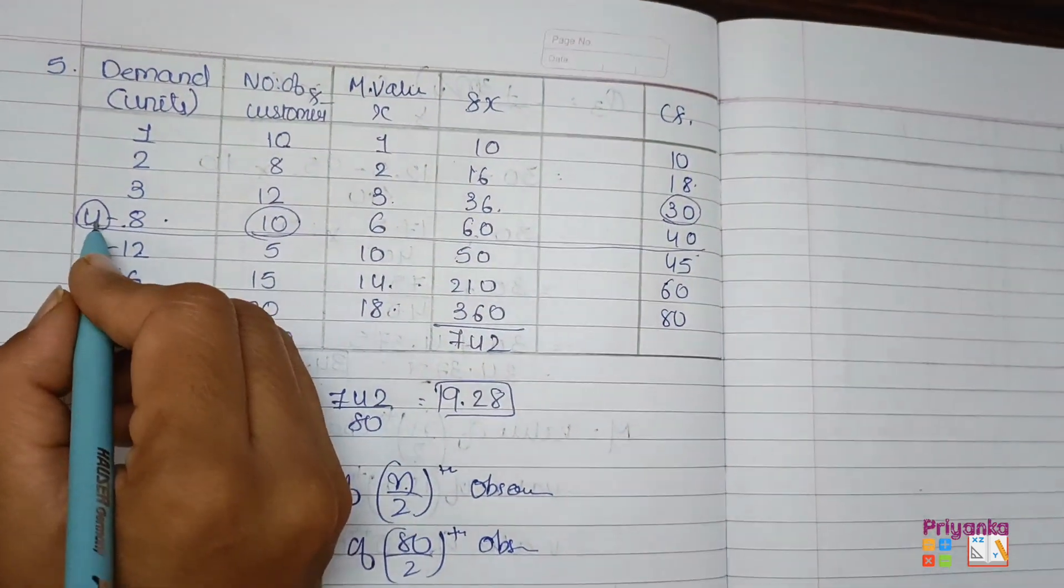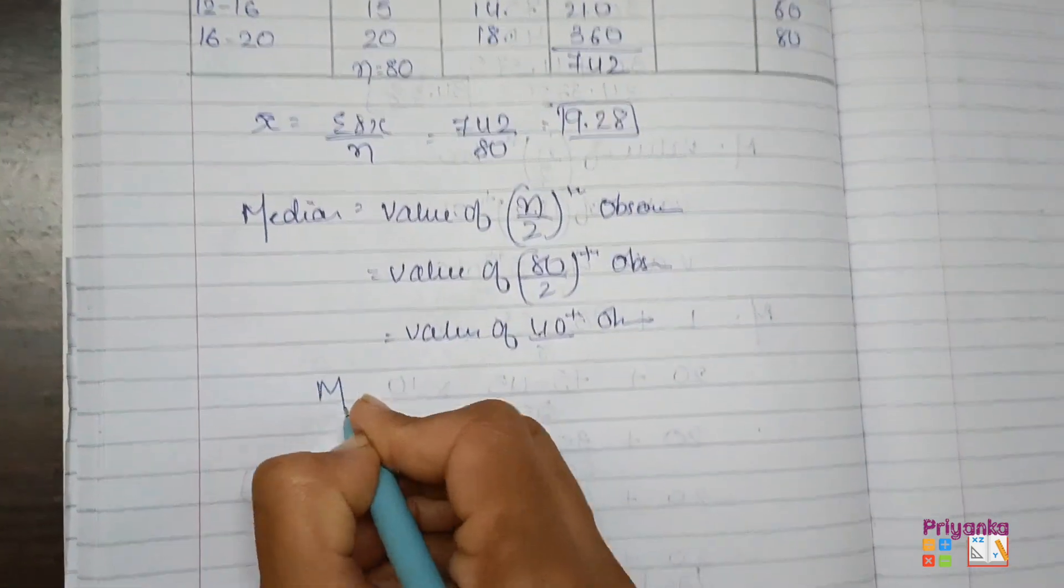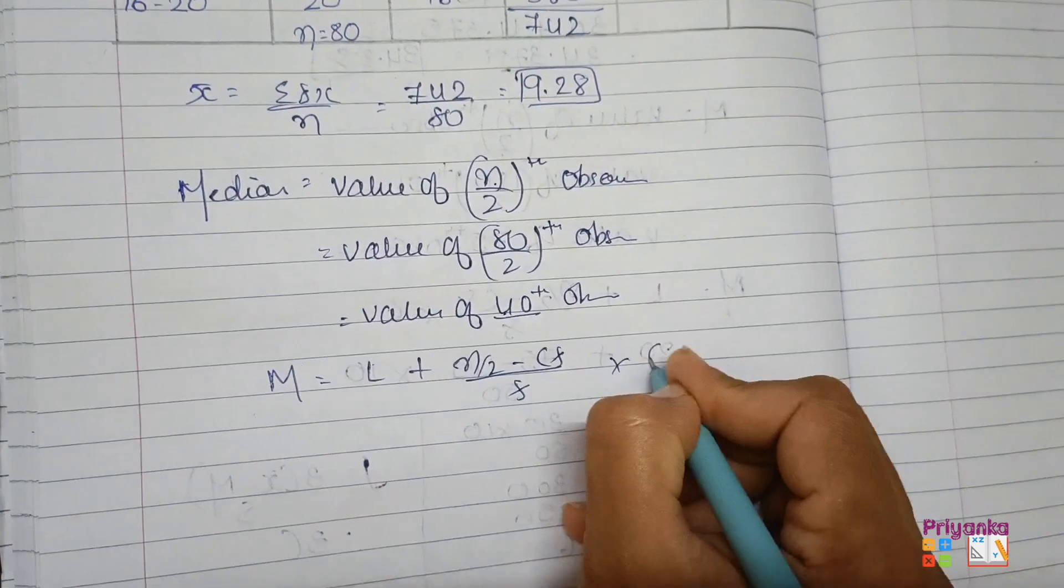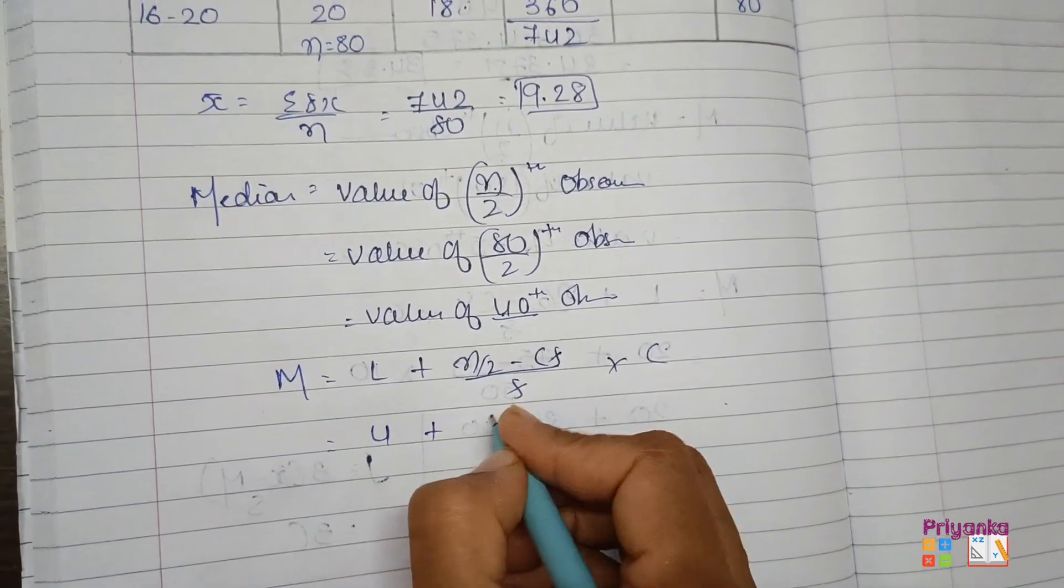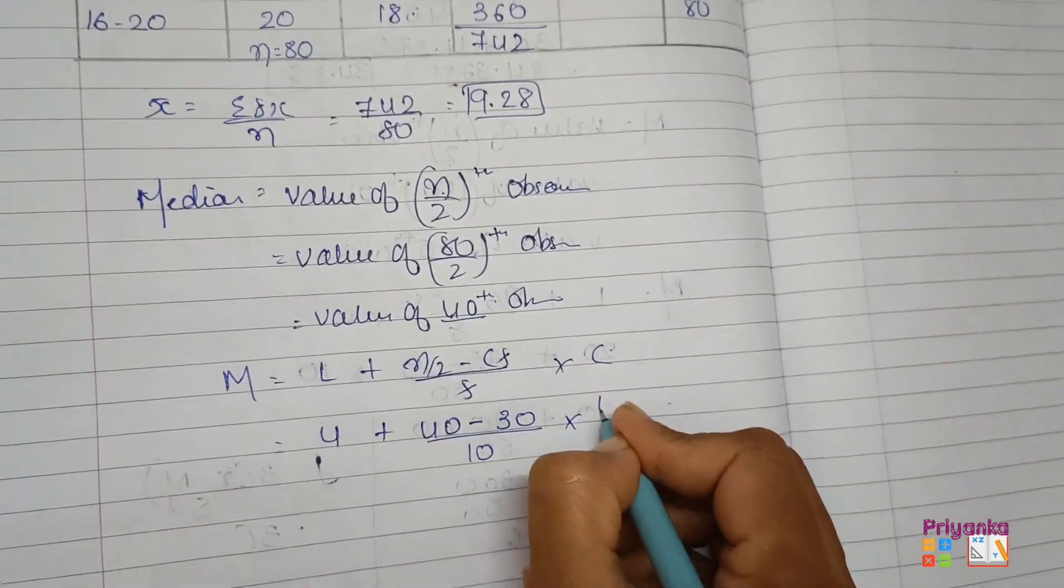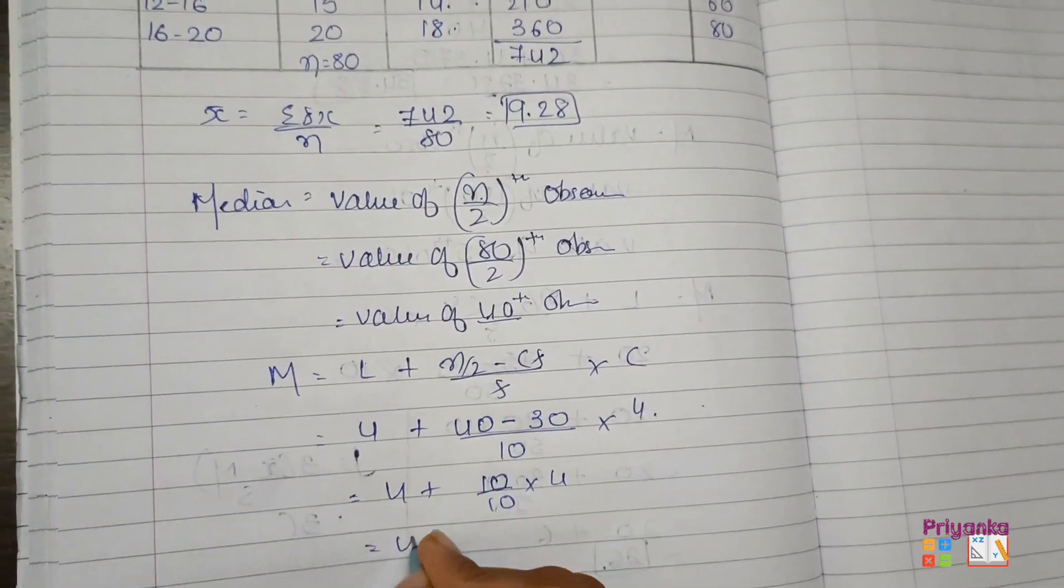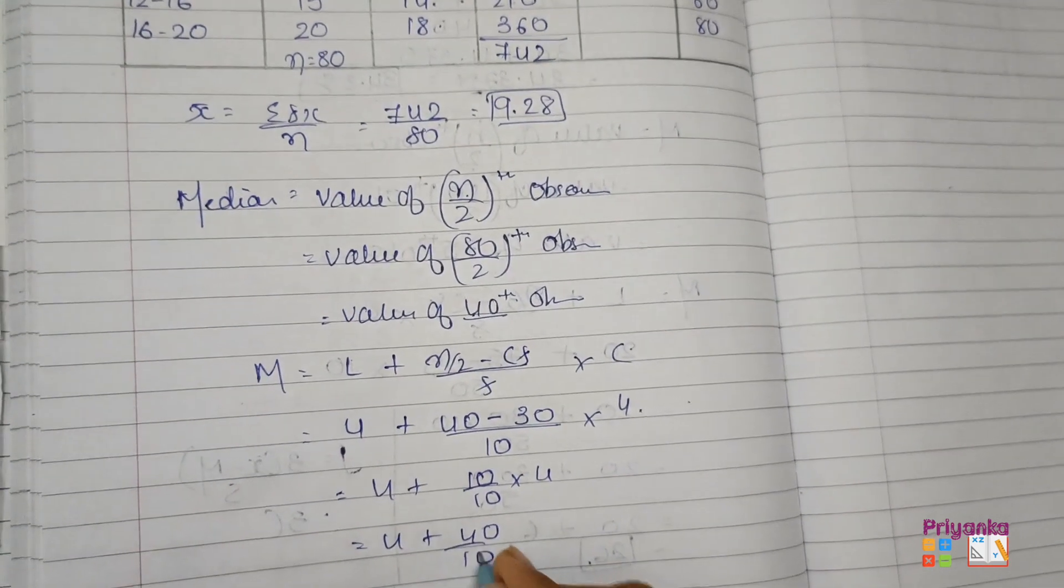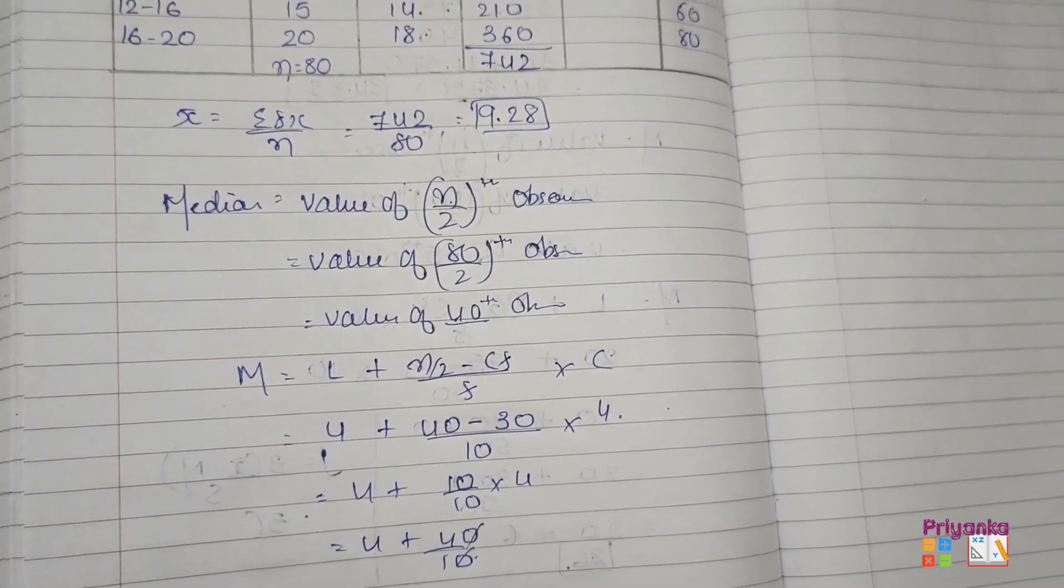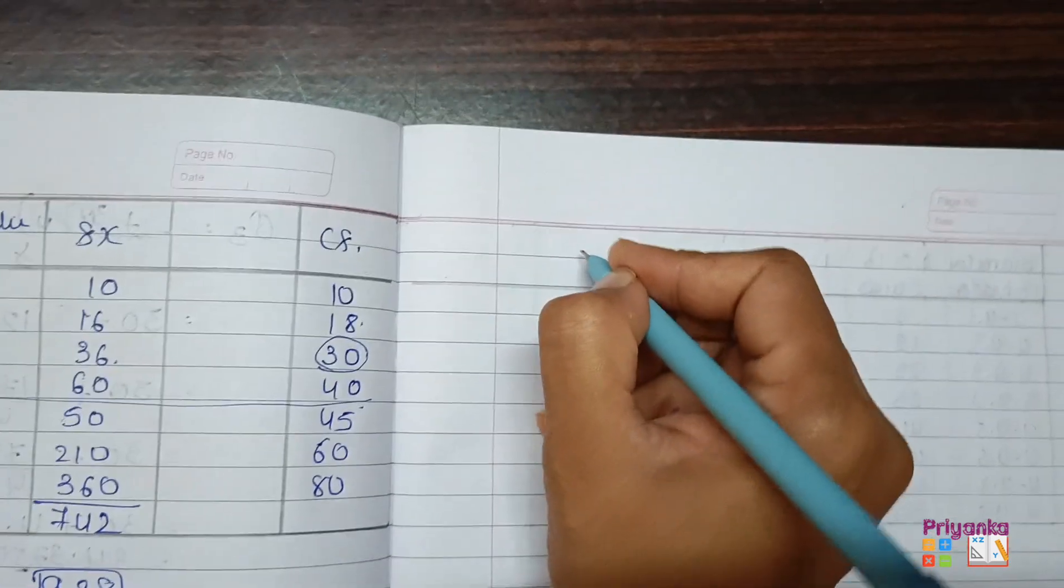The 40 is exactly at 40. Here is the lower limit, this will be the frequency, and this will be the cumulative frequency. 8 minus 4 is 4 will be the class length. Now we will keep formula, L plus n upon 2 minus CF upon frequency into C. The lower limit is 4, n upon 2 is 40, minus CF is 30, frequency is 10, and the class length is 4. 10 upon 10 into 4, 40 upon 10 which will be 4 plus 4 is 8. So here we get the median.